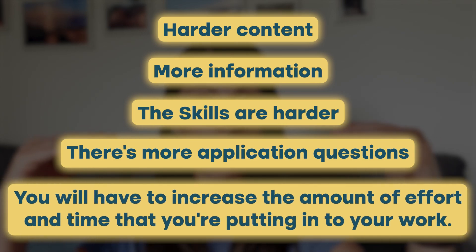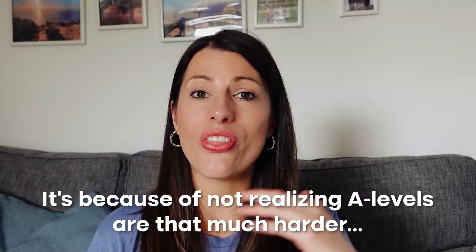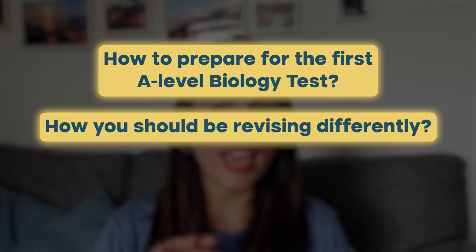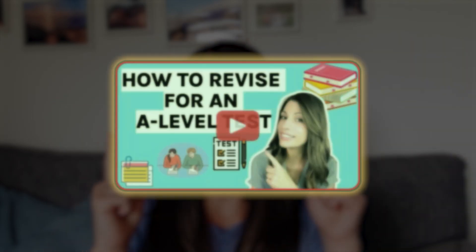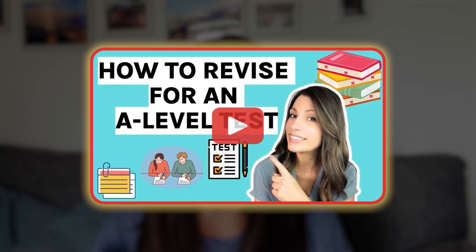It's actually completely normal that students who get 8s and 9s at GCSE often get something like a grade C in their first A-level biology test. It's because they don't realise A-levels are that much harder — you do have to put in much more effort and change the sorts of revision you're doing. If you want to know more about how to prepare for the first A-level biology test, how you should be revising differently, and how you might need to change your study skills and mindset, then check out my video on how to prepare for the first A-level test.